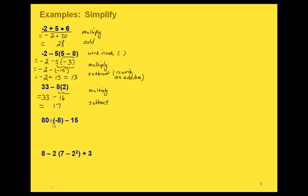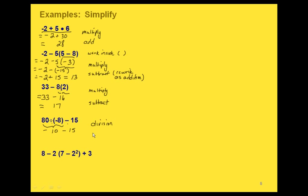In this one, we have a division and a subtraction. So again, multiplication and division come before addition and subtraction. Our first step is to do the division. Notice we have two numbers with different signs, so we know our result is going to be negative, and 80 divided by 8 is 10. So that gives us negative 10 minus 15.